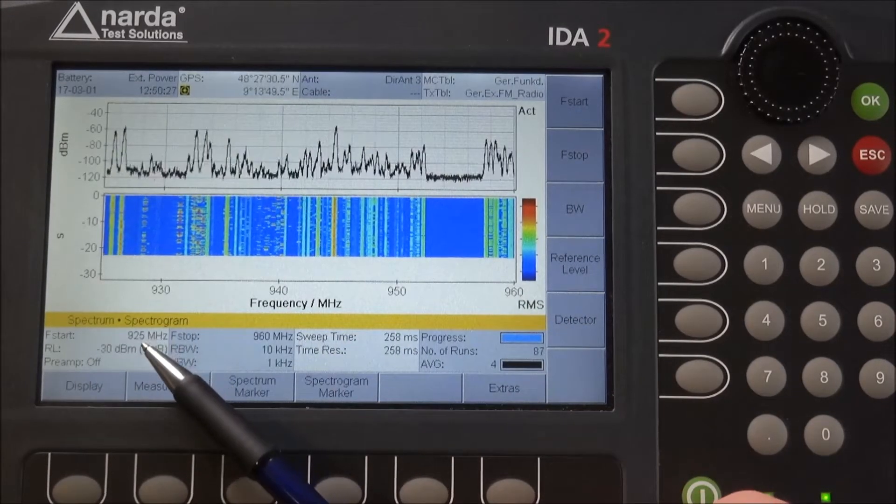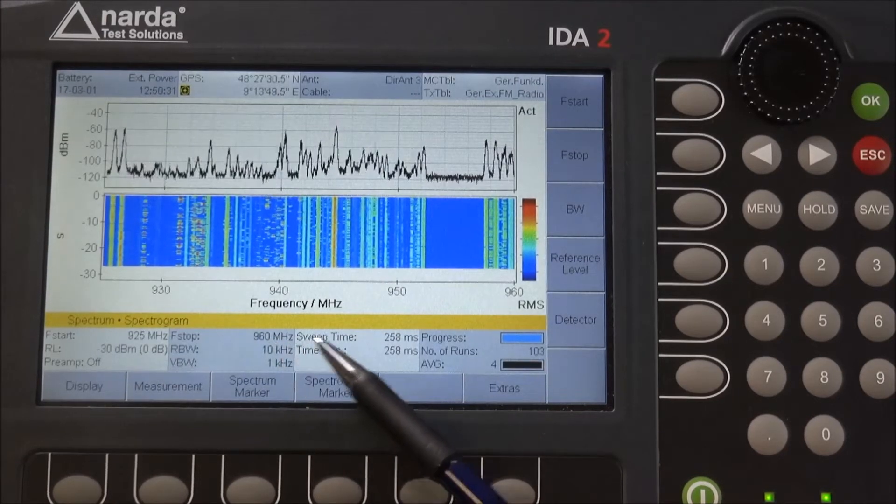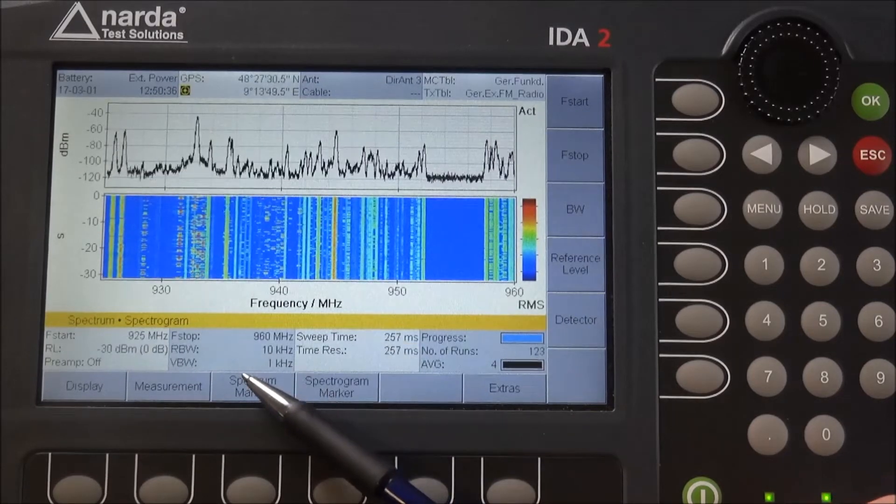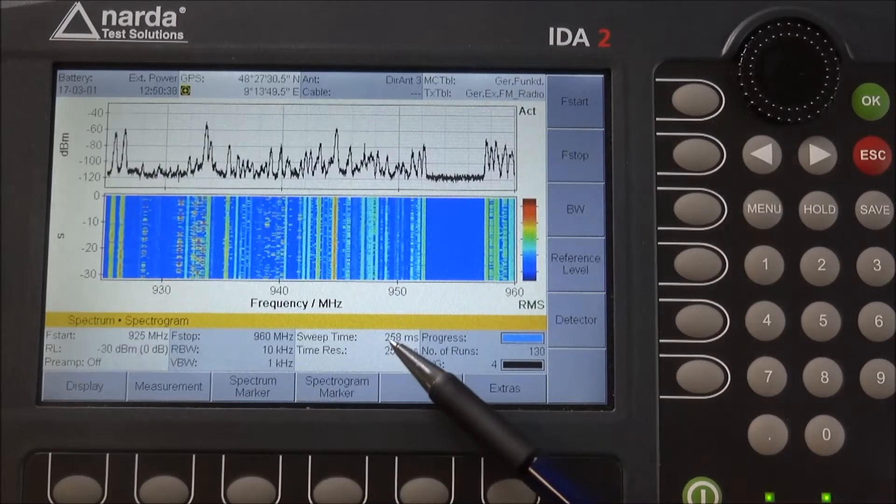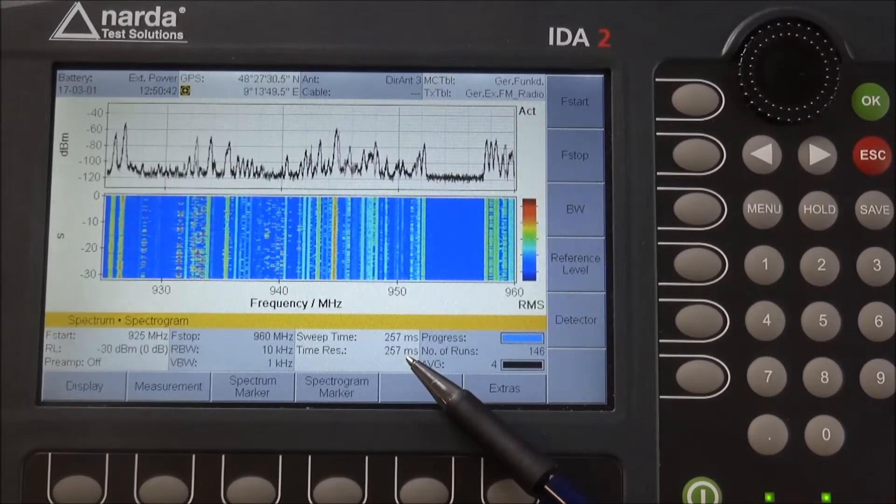We have a start frequency of 925 and a stop frequency of 960 megahertz. Our sweep time, which is influenced by the RBW and VBW, amounts to roughly 260 milliseconds.